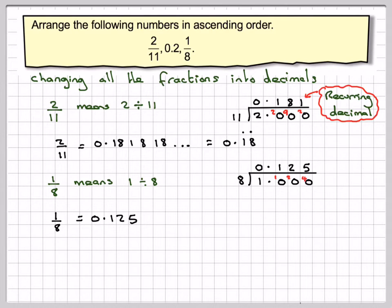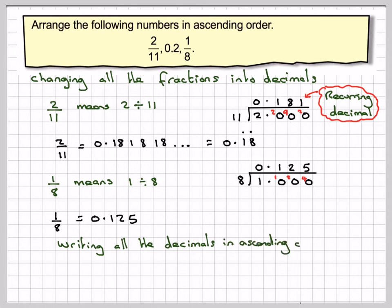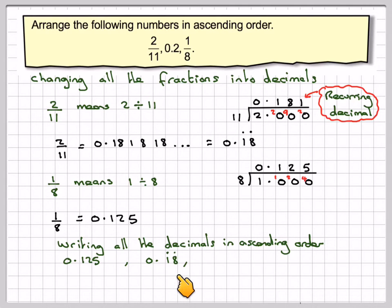Now we've got them all as decimals. Writing all the decimals in ascending order — which one comes first? 0.125 comes first, 0.18 recurring comes second, and 0.2 comes third.